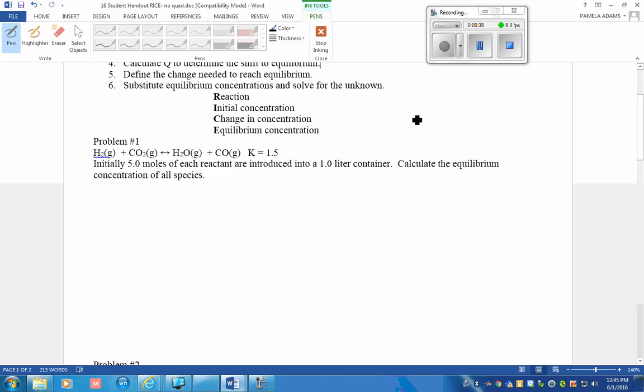Now I'm going to write the equilibrium expression and that would be K equals the products over the reactants raised to their coefficients. Everything has a coefficient of one. Chemists never write the number one, so the equilibrium expression looks like this.